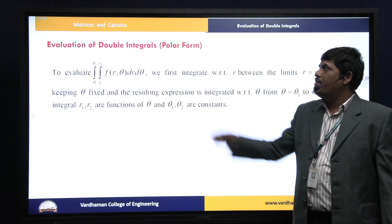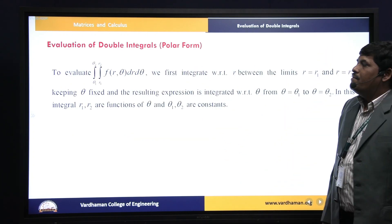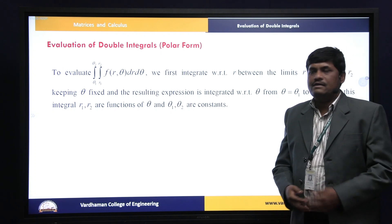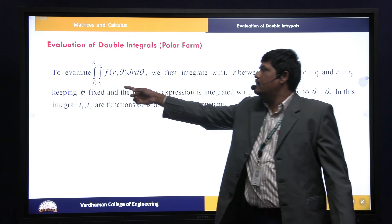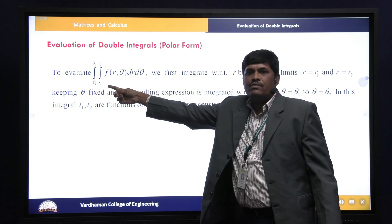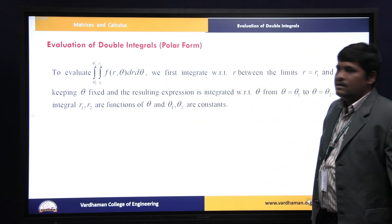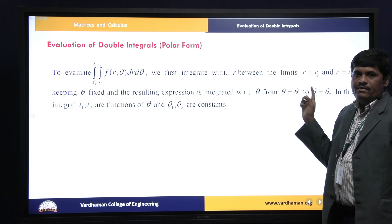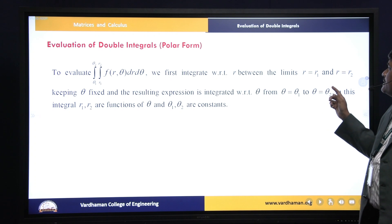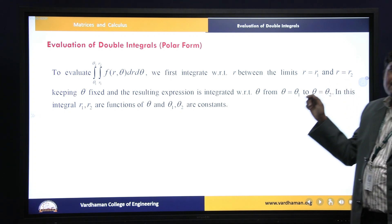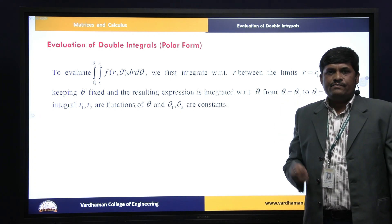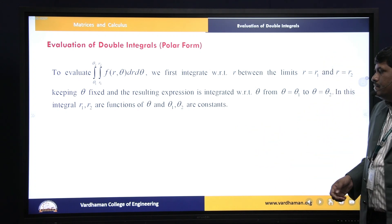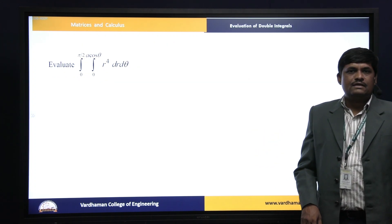The next topic is evaluation of double integrals in polar form. You can identify it in the exam because it contains r and theta. To evaluate the integral from theta1 to theta2, r1 to r2 of f(r,theta) dr dtheta, we first integrate with respect to r between limits r1 and r2 keeping theta fixed, then integrate with respect to theta.